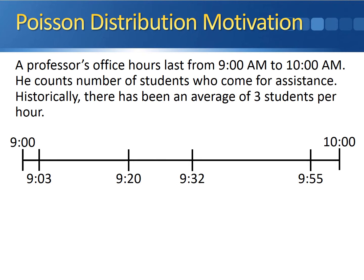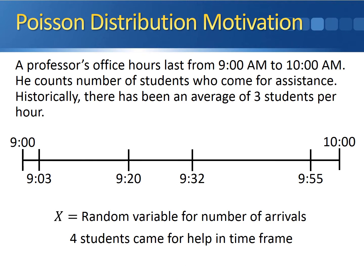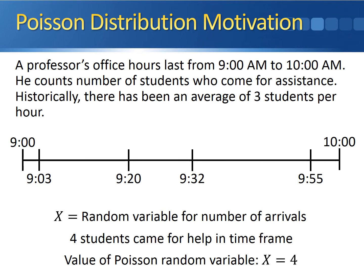Here's what we do with the Poisson distribution. Let's let x denote the random variable for the number of arrivals. There were four students who came for help during this time frame, so the value of our Poisson random variable is equal to four. We had a one-hour period of time and witnessed four arrivals, so the value of our random variable here is equal to four.